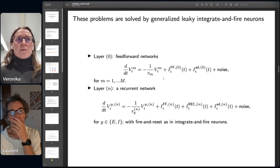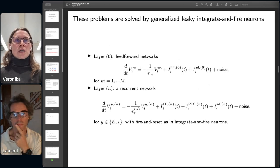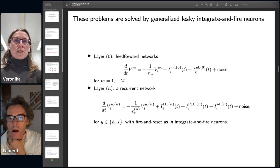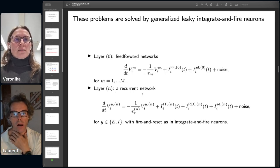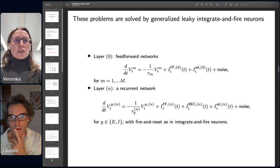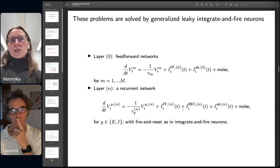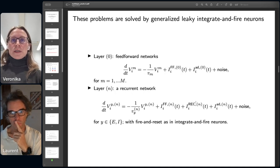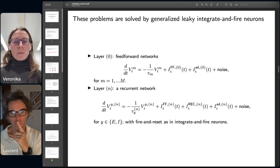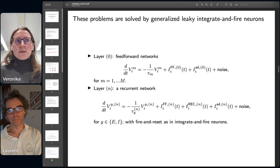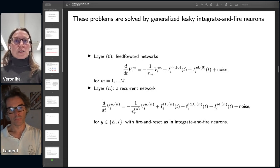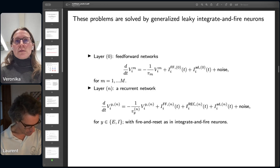If we do some math, what we recover is actually generalized leaky integrate-and-fire neurons that can solve our optimization problems. In layer zero, we recover this membrane equation where we have a leak current, a feed-forward current, some spike-triggered adaptation, and noise. In a recurrent layer for the population of excitatory or inhibitory neurons, we also recover a similar type of membrane equation, but in addition we also have recurrent excitatory and inhibitory synaptic connections. This is something we find good because leaky integrate-and-fire neurons are known to be good at reproducing cortical activity.